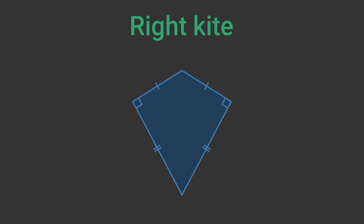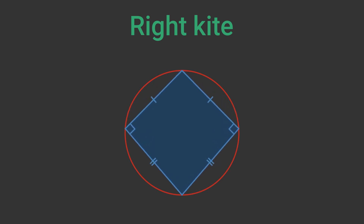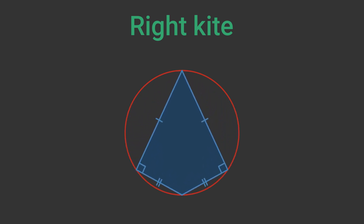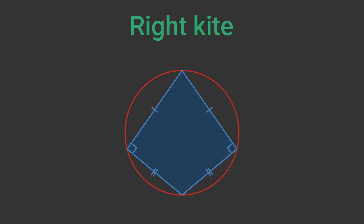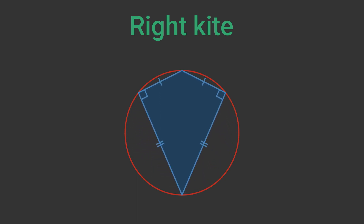A right kite is a kite where the angles at the two arms are right angles. Right kites are cyclical — this means that we can draw a circle that passes through all four corners of the kite. The opposite is also true: if a kite isn't a right kite, then it isn't cyclical.